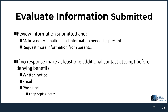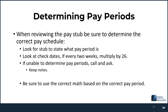When you get past the time frame for the second notice, you're done. Determining pay periods: when reviewing pay stubs, be sure to determine the current pay schedule. Look for the stub to state what the pay period is and look at the check dates. For example, if they got a paycheck on October 1st and October 15th, that means they're getting paid twice a month. If you're not sure and can't determine it, call and ask. Make sure you're keeping notes.